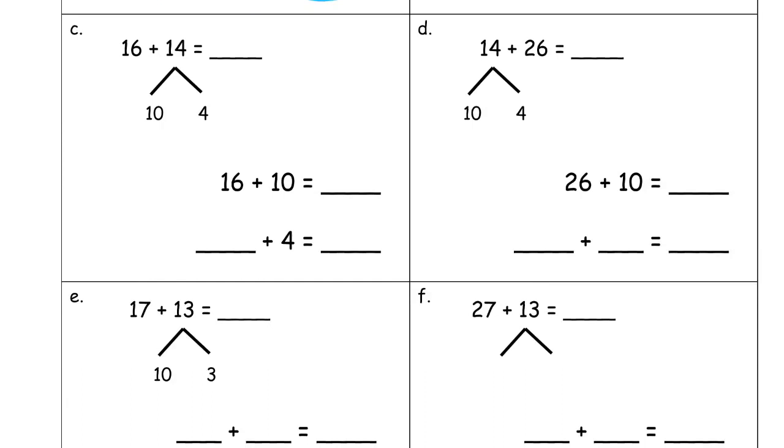16 plus 14, starting by splitting up the smaller number. Adding the 10 first. 26. Then take that 26 and add 4 more. You might recognize 6 and 4 are partners to 10 right there, so you're gonna have 20 plus another 10. 30.